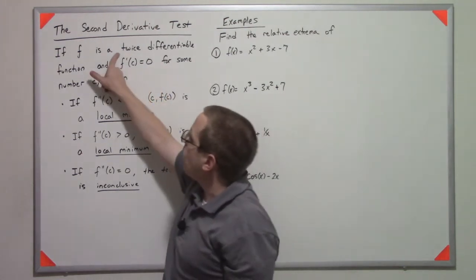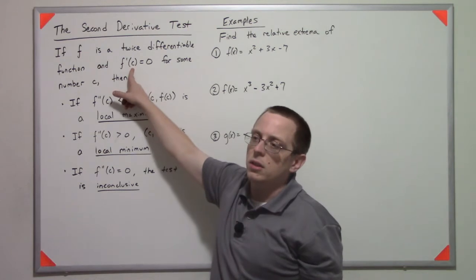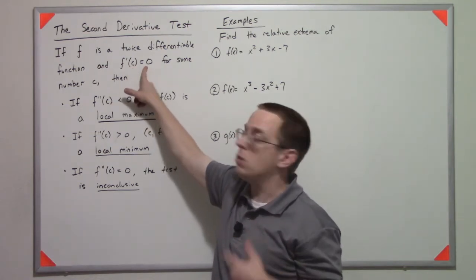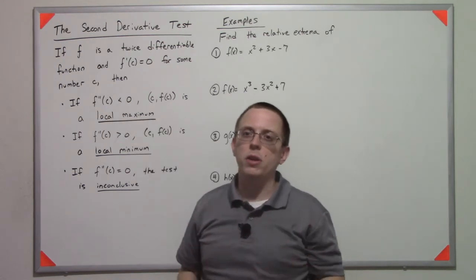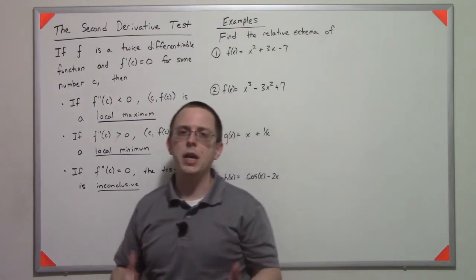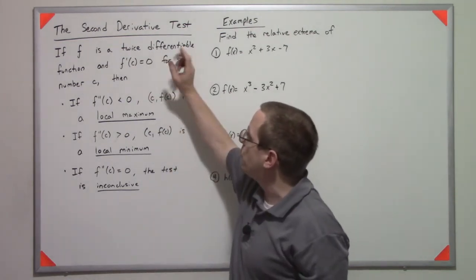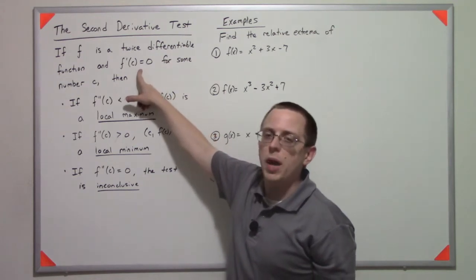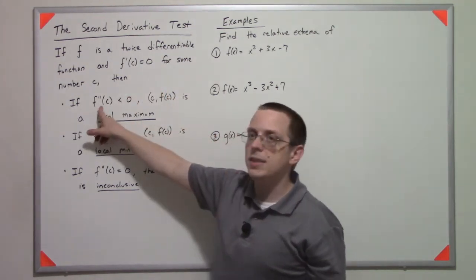It says that if I've got a twice differentiable function and the value of the first derivative is zero for some number c, so there's a little bit of technicality under there. Technically this only has to be twice differentiable within some neighborhood, et cetera, but for practical purposes take a twice differentiable function. If you find a location where the first derivative is zero, then you can take the second derivative.